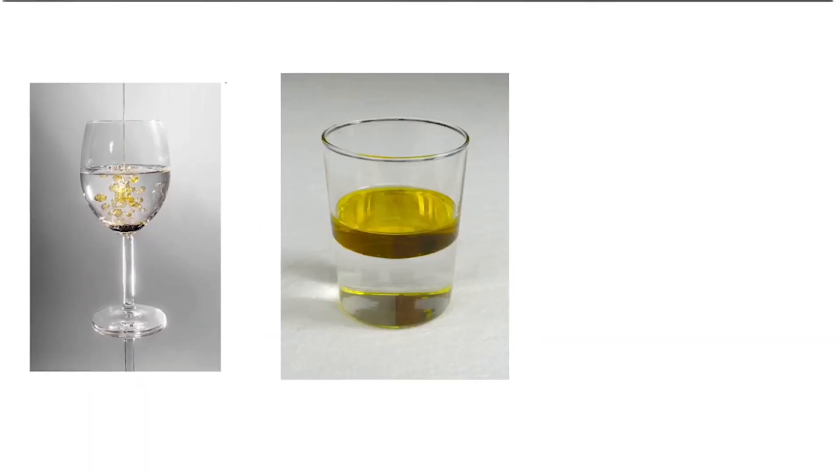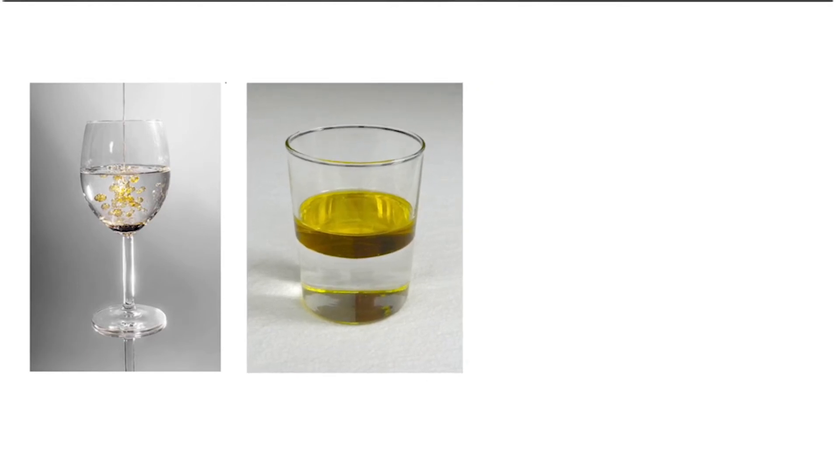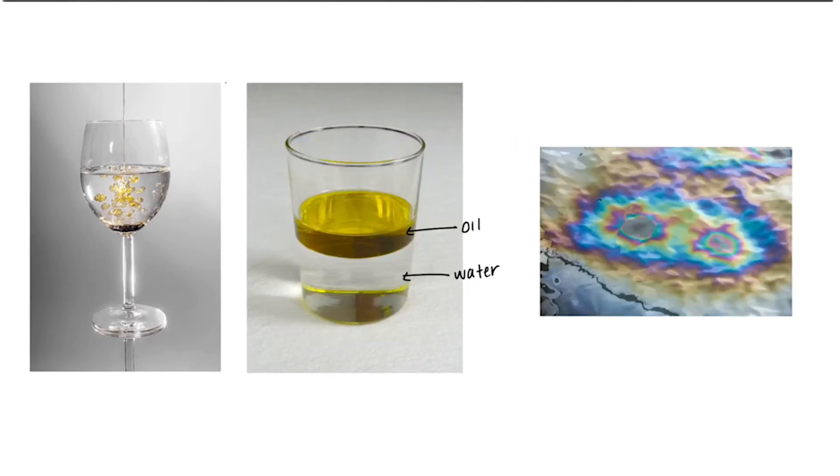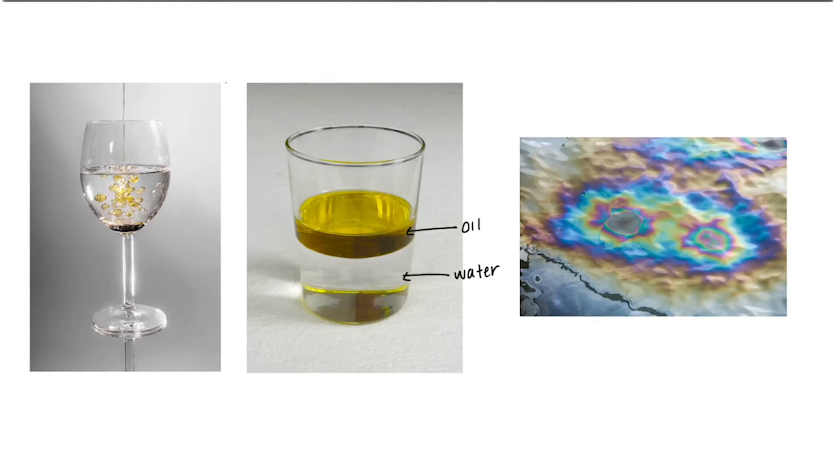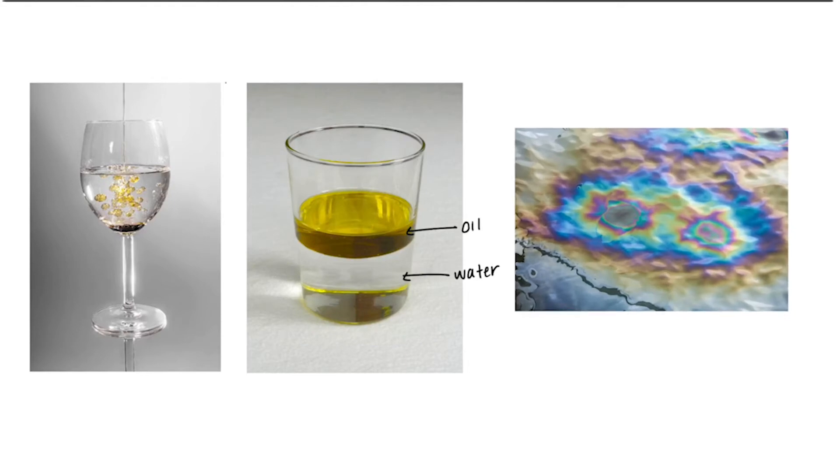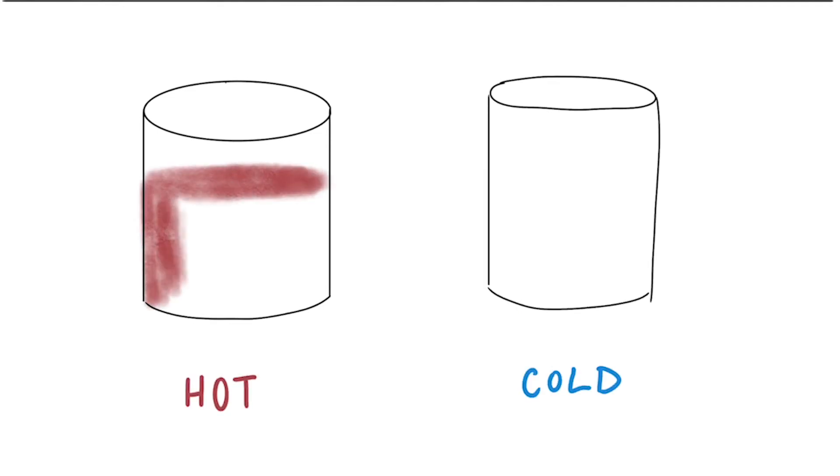Have you ever seen a slick of oil on water? It kind of looks like a rainbow. Well that's oil floating on top of water. Oil is less dense than water, meaning it has less molecules in a given amount of space. On a smaller scale, water has different densities at different temperatures. Hot water is the least dense, meaning that there's not as many water molecules in a given area. It has the most space between each water molecule.